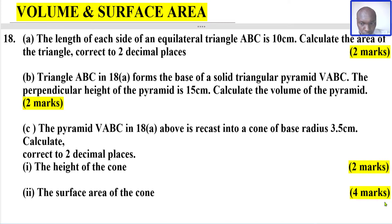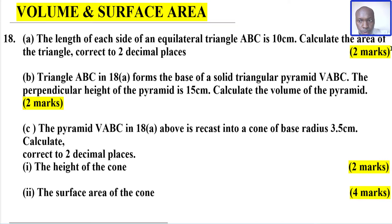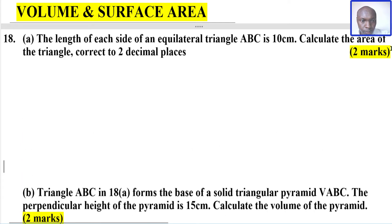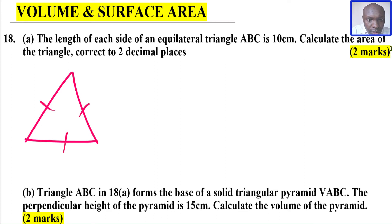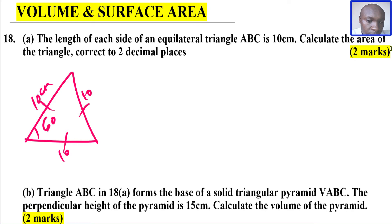Let's go straight to the first part of the question. You're given the length of an equilateral triangle ABC as 10 cm and asked to calculate the area. So we've got this equilateral triangle with sides of 10 cm. Since it is an equilateral triangle, all the angles are 60 degrees. You can use various formulas — Heron's formula, or the formula using two sides and an included angle.